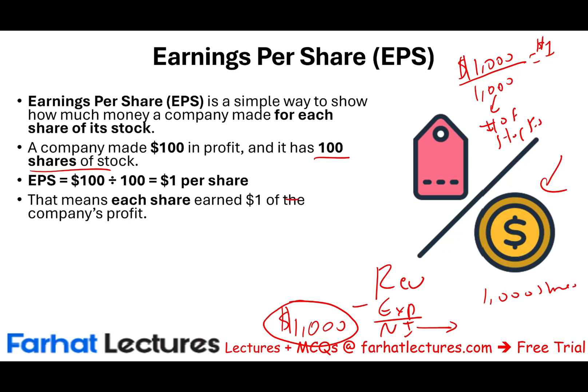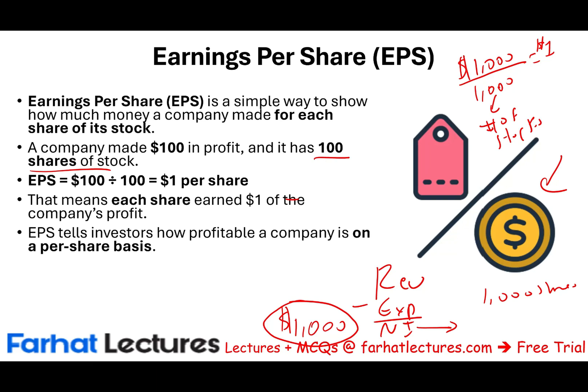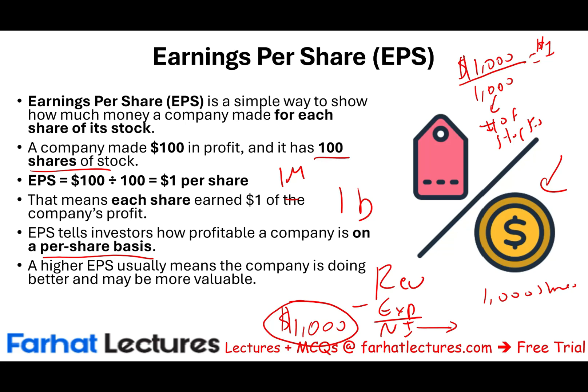If the company distributes all earnings as dividends, you would receive $1 per share — so $5 on 5 shares. In the absence of distribution, your EPS is still $1. This tells investors how profitable the company is on a per-share basis, which is important because it doesn't matter whether the company earned $1 million or $1 billion in total — what matters is earnings per individual share.